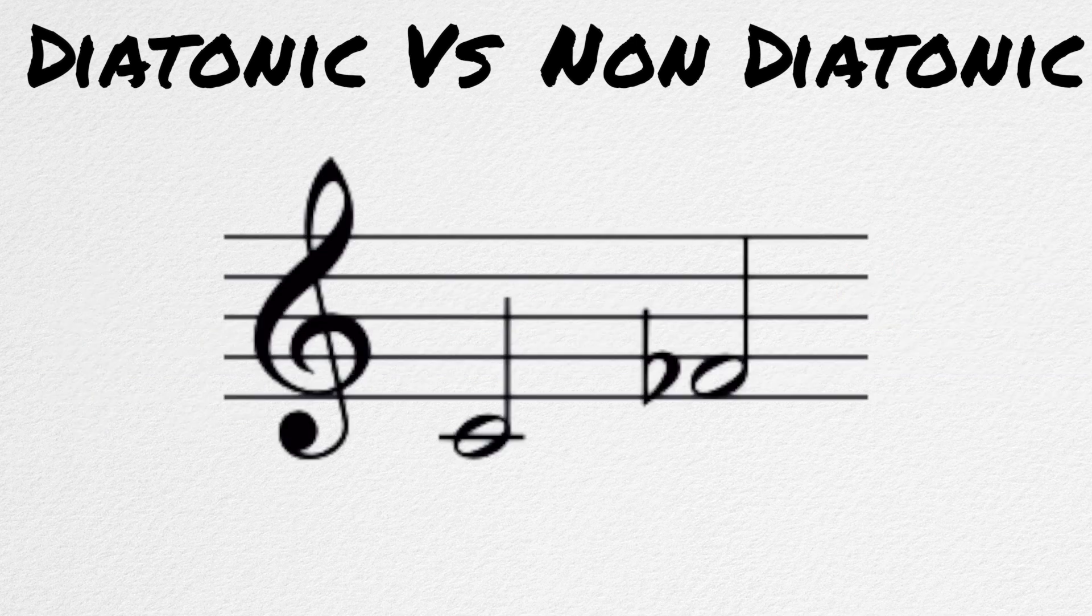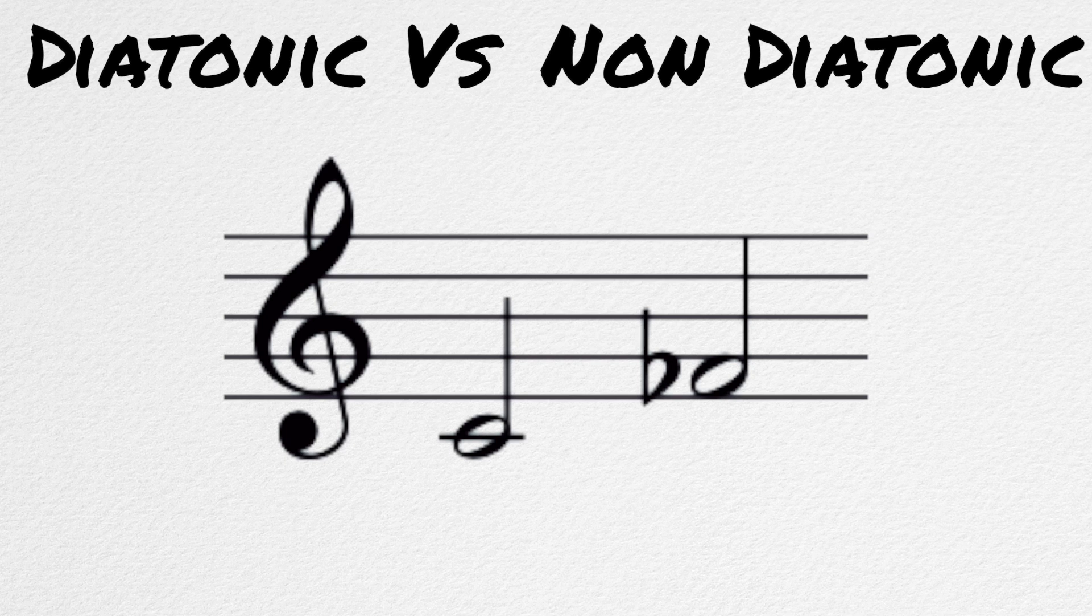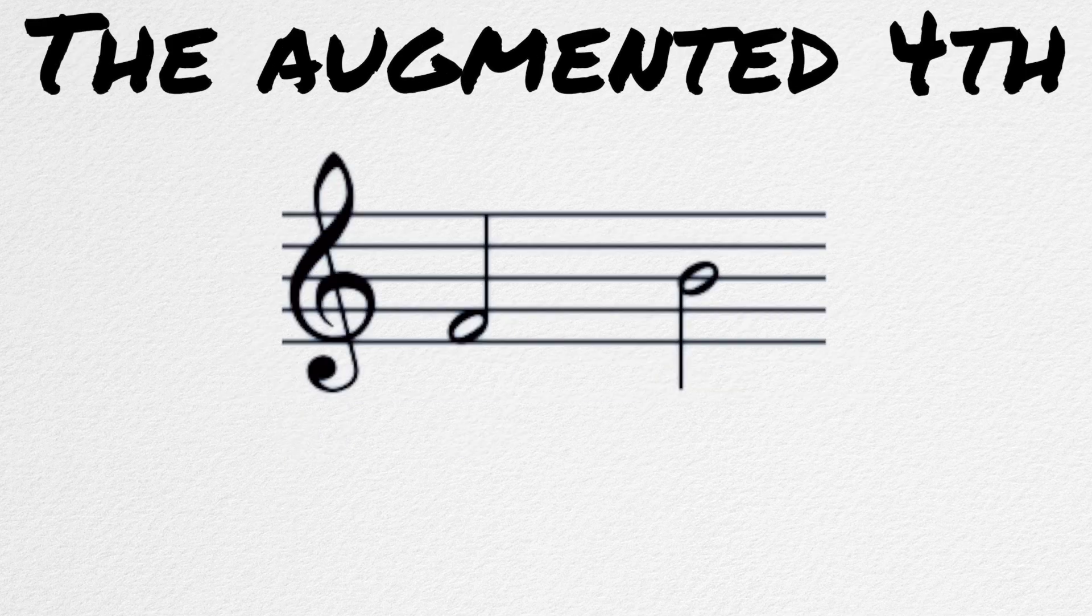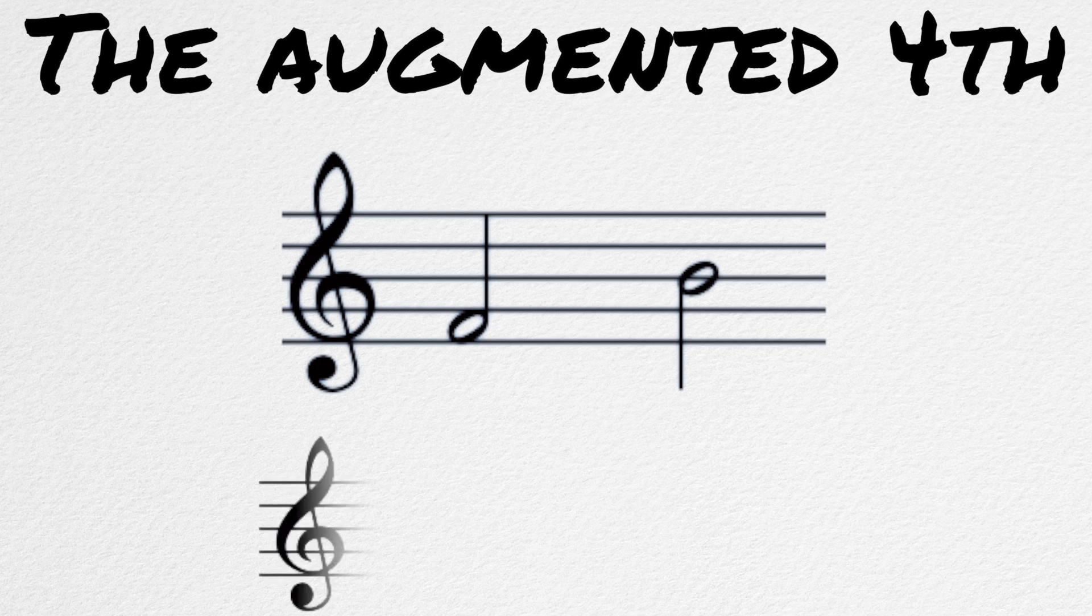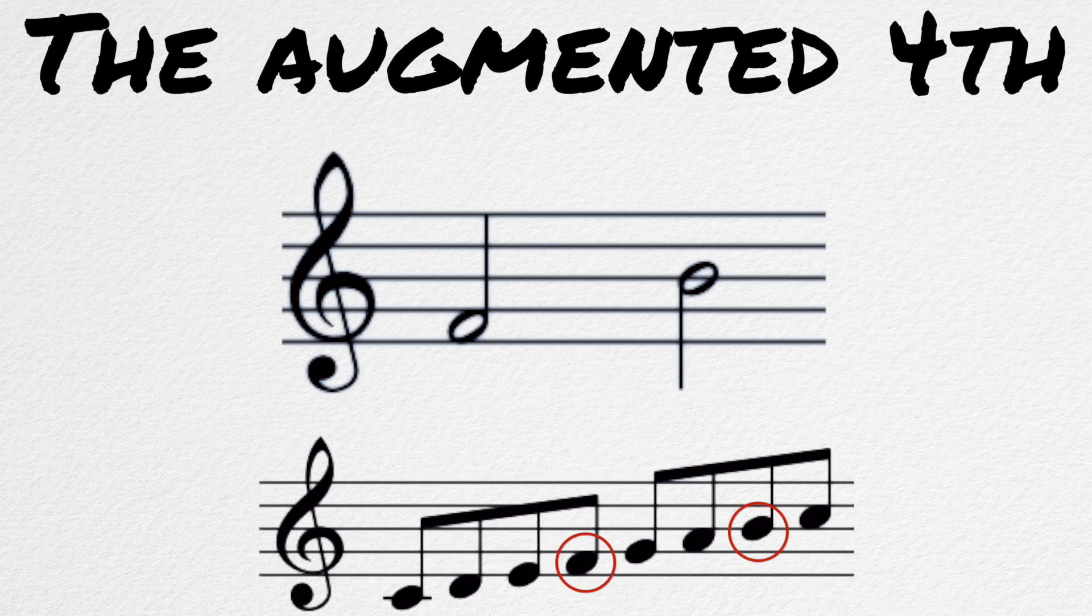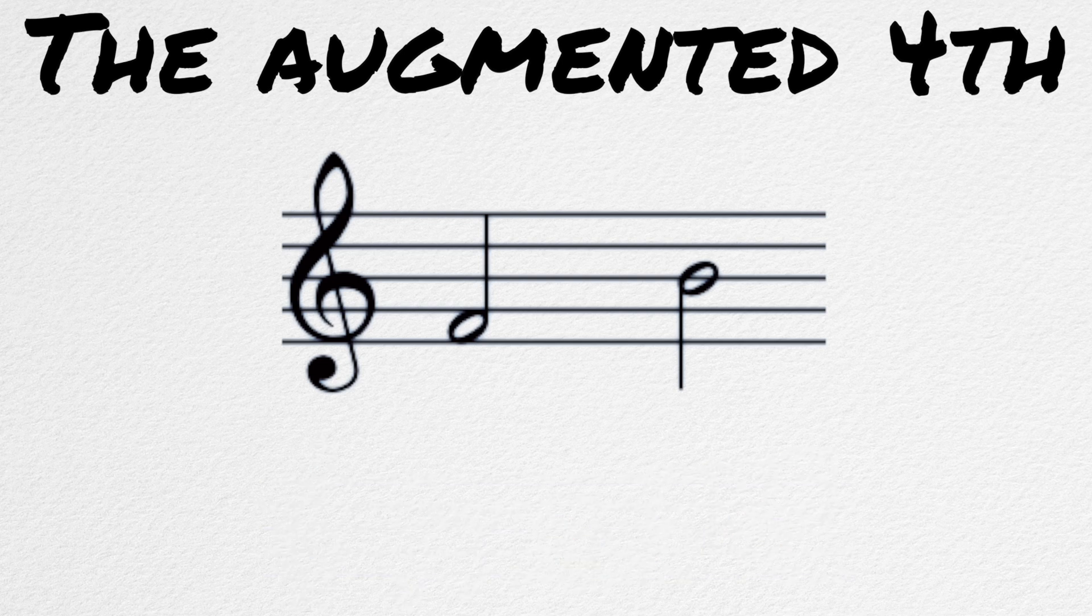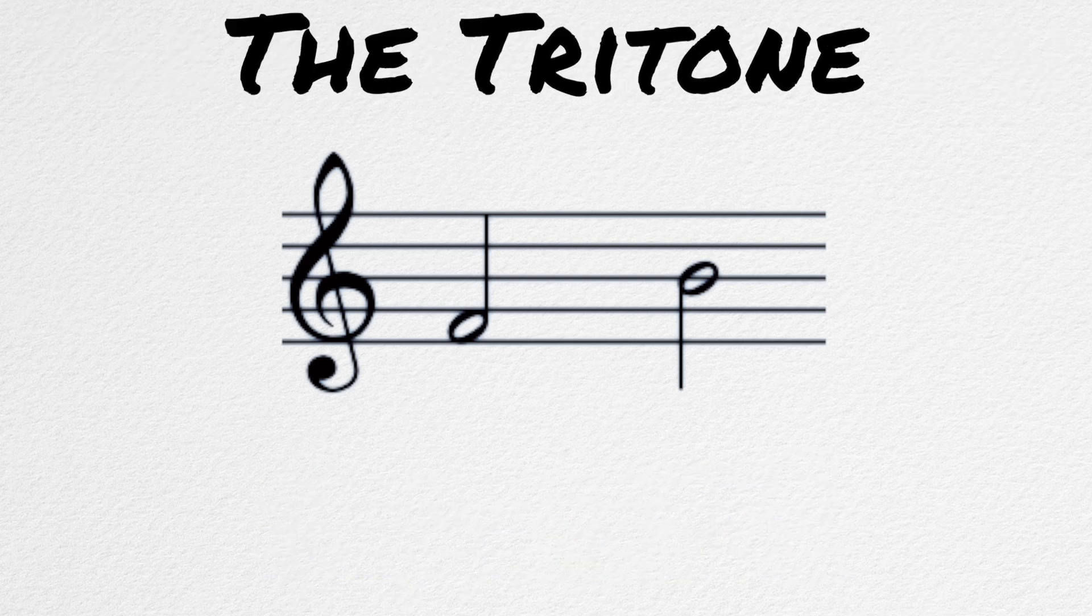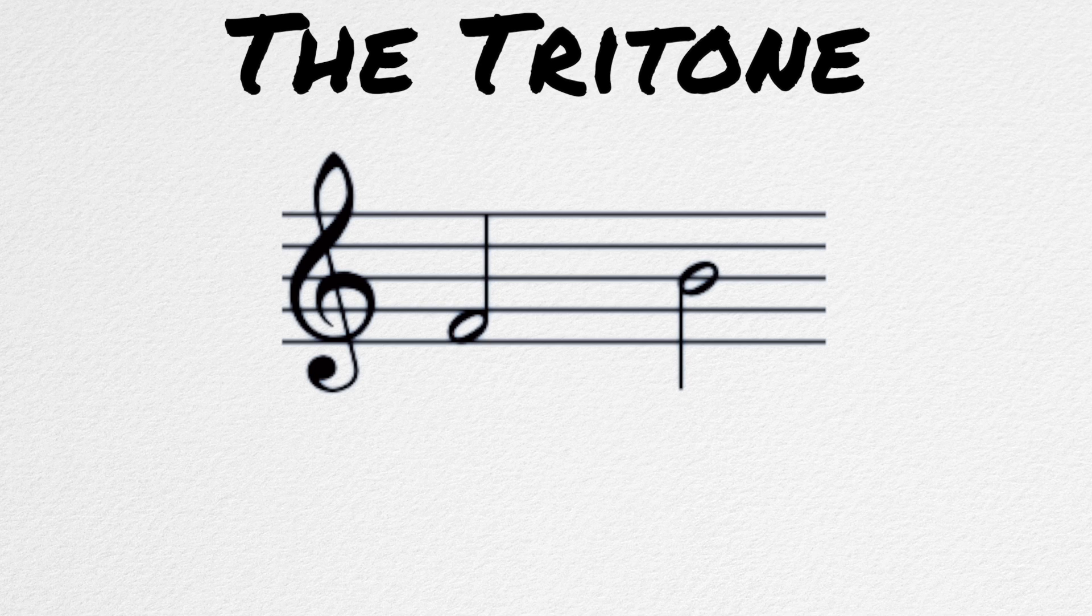Non-diatonic intervals are those that don't naturally occur within the major scale, such as this. Augmented and diminished intervals are almost always non-diatonic, with one exception. The augmented 4th. The augmented 4th naturally occurs between the 4th scale degree and the 7th scale degree of a major scale. The sound of this interval goes by another name that I'm sure you've all heard of, the tritone. And is considered the most dissonant interval of all.